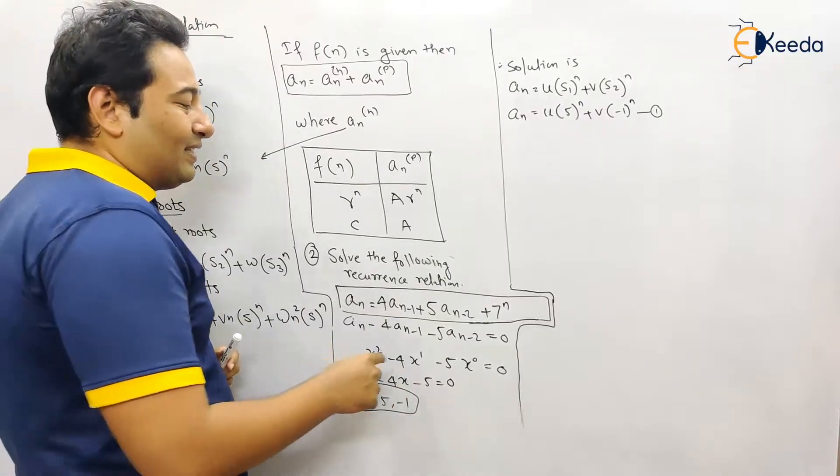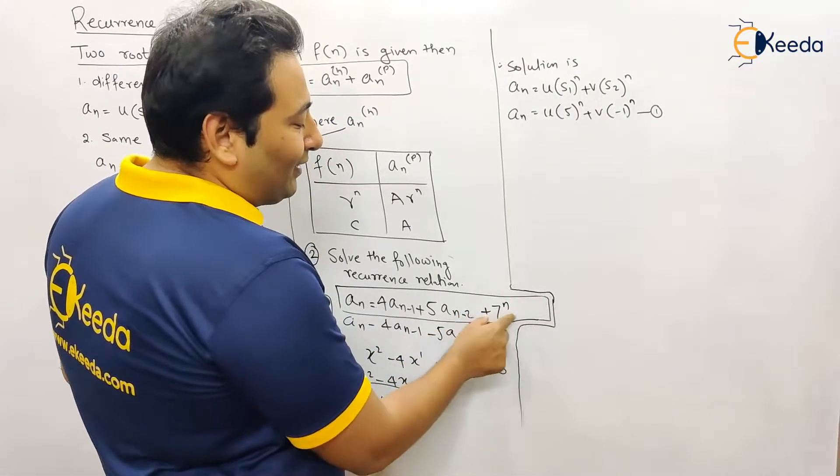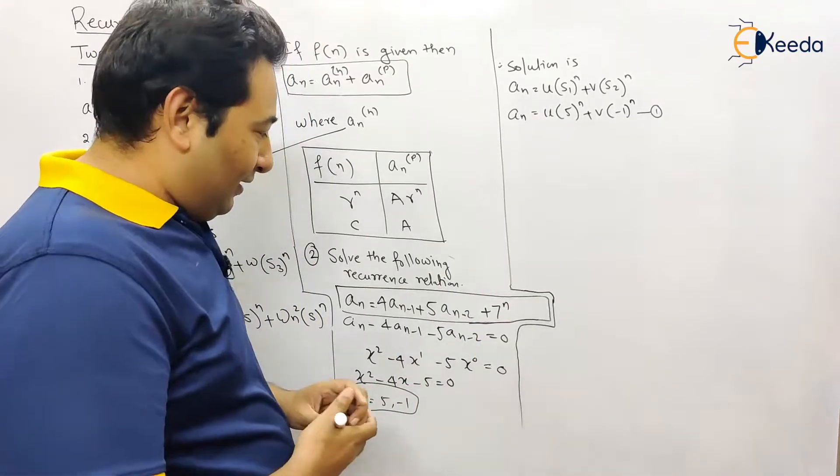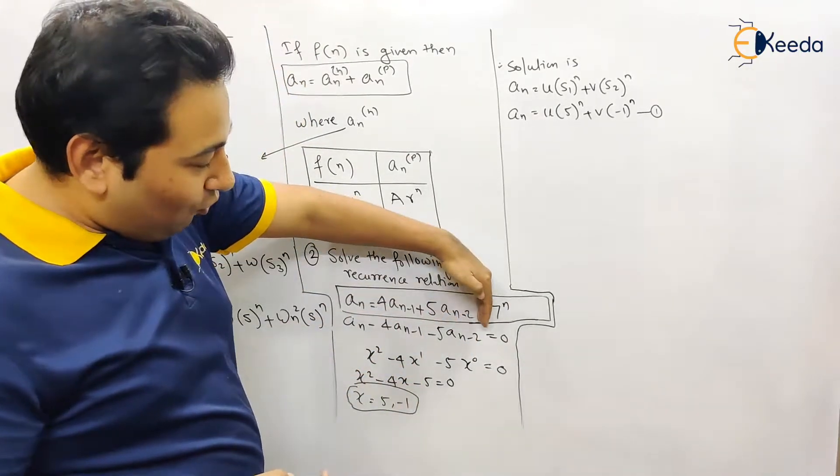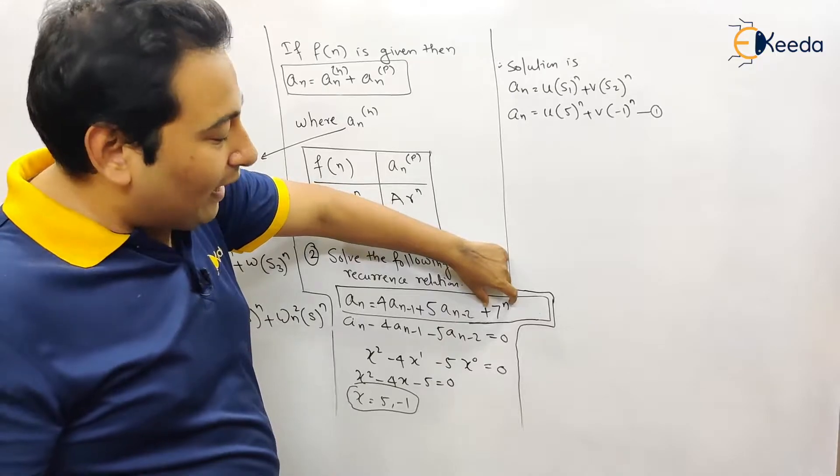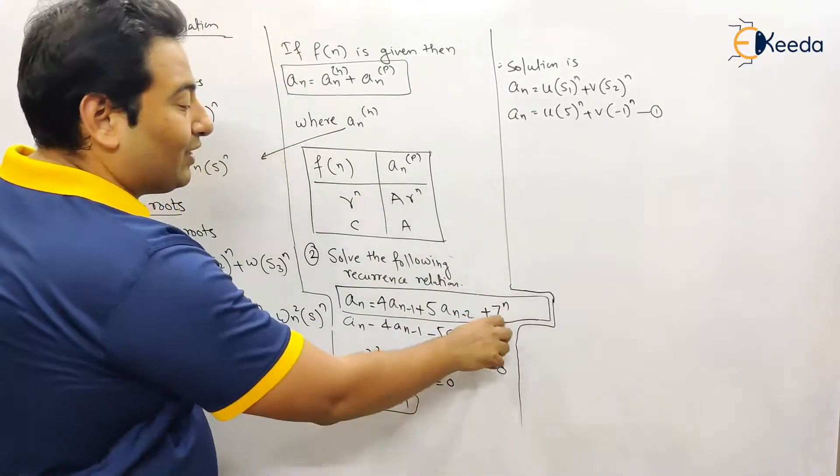The only difference is in problem number one we were not having this f of n. Problem was till here. Now we included f of n. Now we're going to see what are the changes because of this.